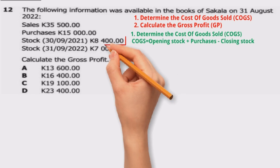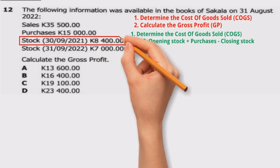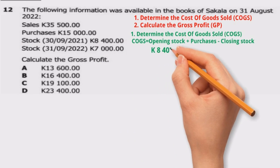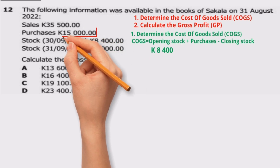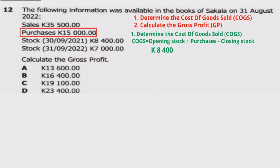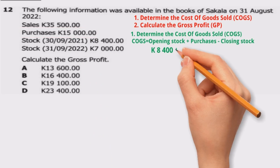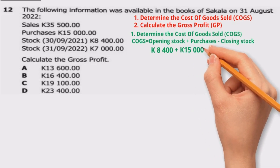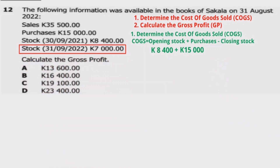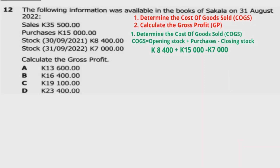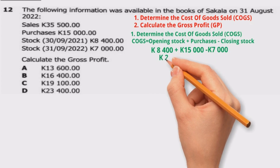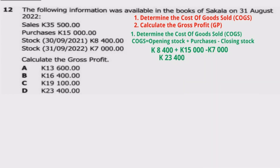So what is the opening stock in Sakala's book? The opening stock is 8,400 kwacha. Then purchases — from the information — is 15,000 kwacha, so we write plus 15,000 kwacha. Then closing stock is 7,000 kwacha, so we write minus 7,000 kwacha. Starting with addition: 8,400 plus 15,000 gives us 23,400 kwacha.